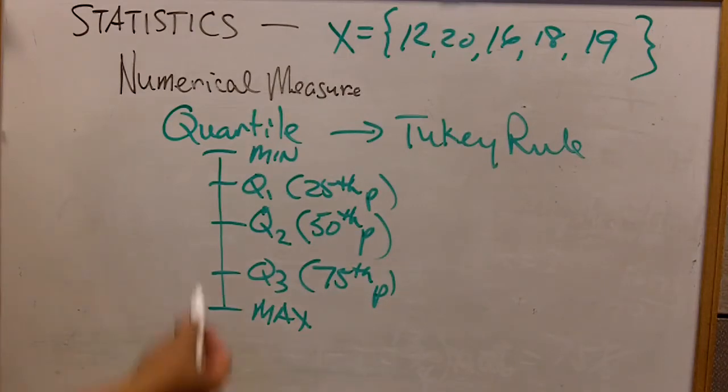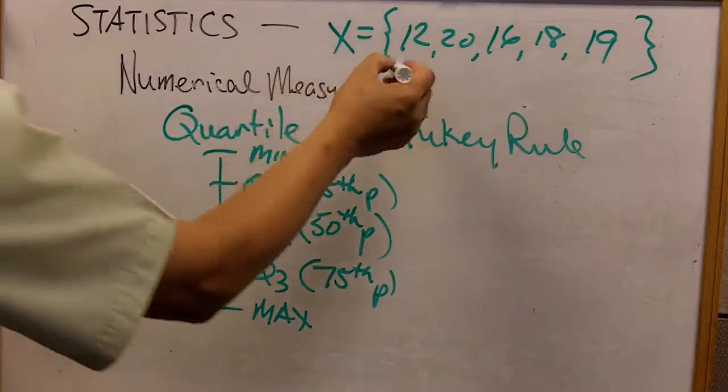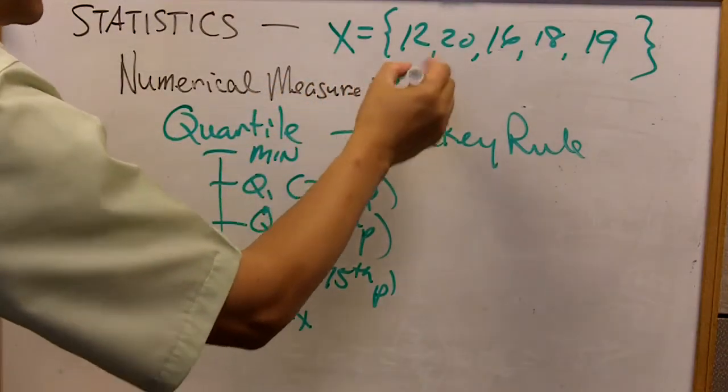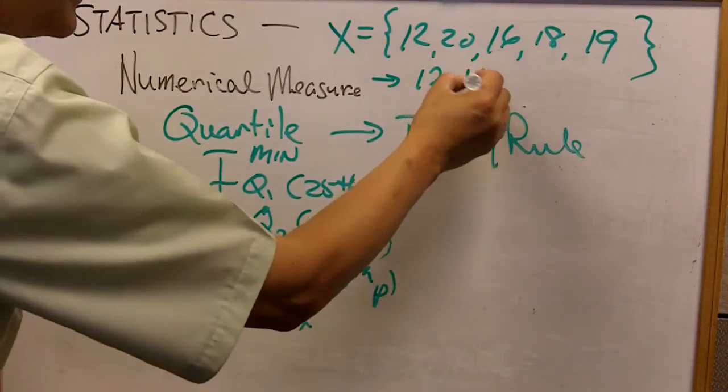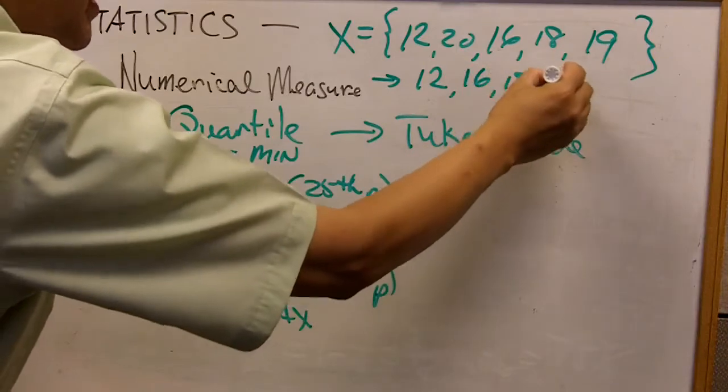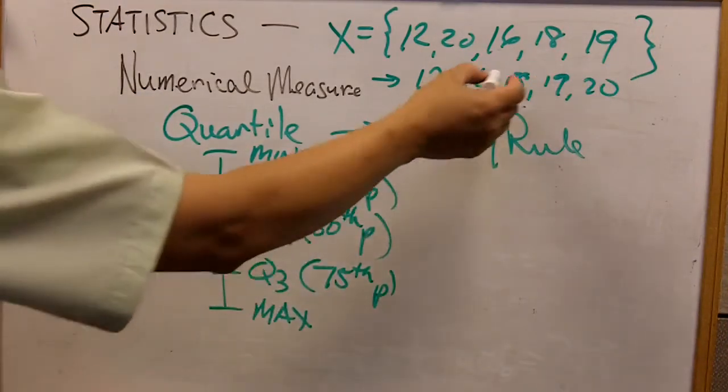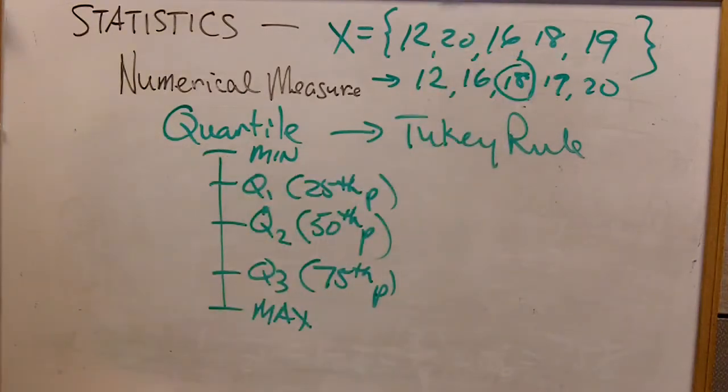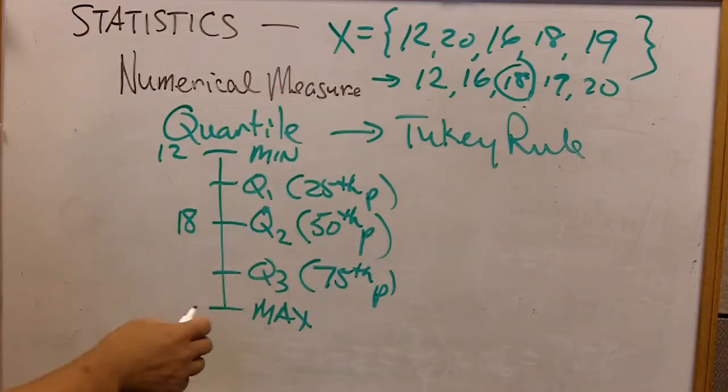Well, to find the five-point summary, we are going to line up this data, so organize them. So it's $12 in the array, followed by $16, $18, $19, and $20. The median is the number that is right in the middle, so the Q2 is $18, and the min is $12, and the max is going to be $20.